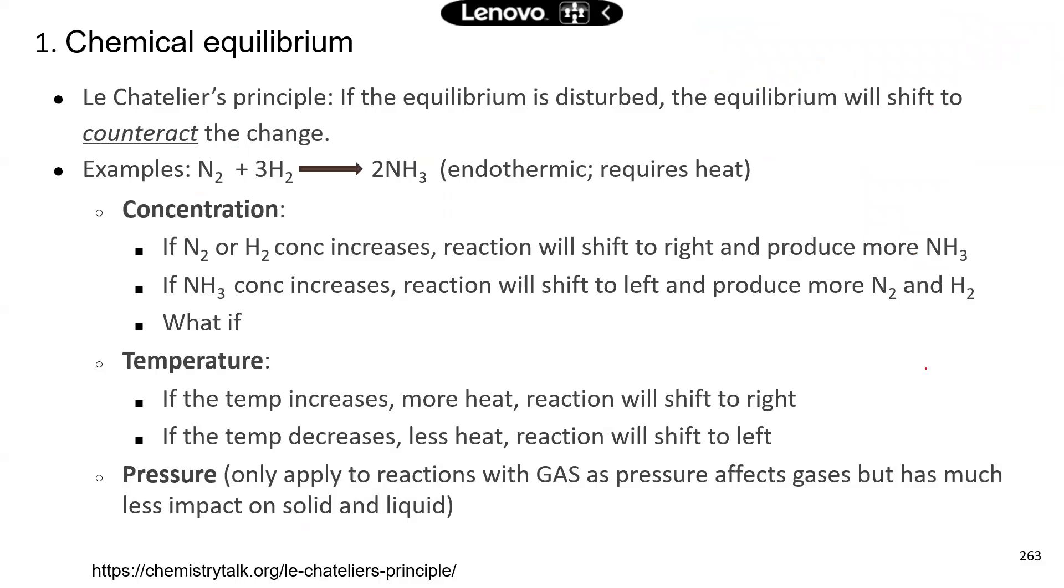Okay, so I have an example here. Nitrogen reacts with hydrogen and that generates ammonia. For this chemical reaction, it's endothermic, meaning this chemical reaction requires heat. So it needs heat to proceed from left to right. How do you remember the term endothermic? Because there's another term, which is exothermic.